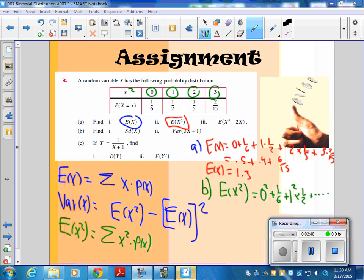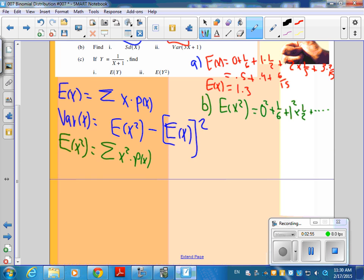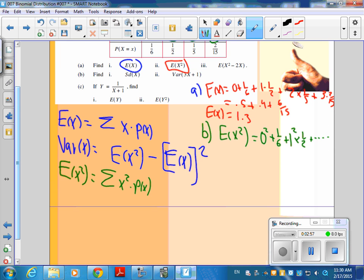Could somebody get me that total, E of x squared, for me? So, again, this was 0 plus 0.5 plus 4 fifths plus 9 times 2, 18 fifteenths. And what's this E of x squared going to give us? It should be bigger than 1.3. 2.5. There you go.